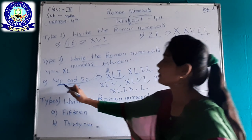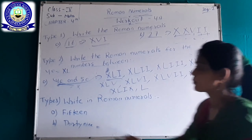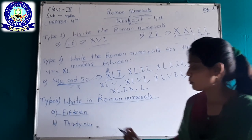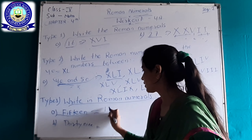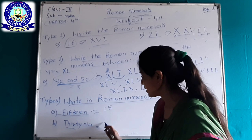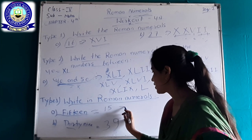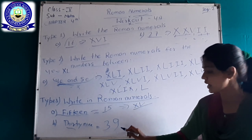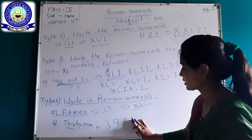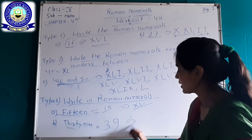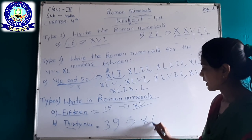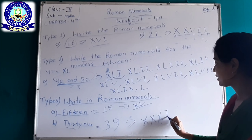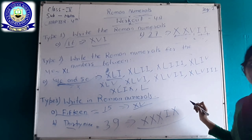This is the Roman numerals between 40 and 50. Your third type of question is: write in Roman numerals. First, write 15 in digits — X for 10 and V for 5, it becomes 15. Then 39 in Roman numerals: write triple X for thirty, then IX for 9. It becomes XXXIX for 39. This is your type 3 question.